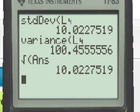So there are three ways to find the standard deviation using the TI-83 for any given list of data.